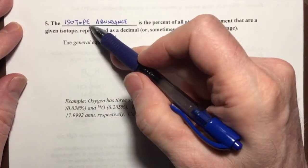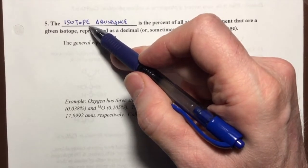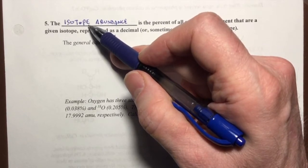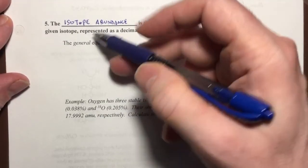We know that isotopes are when you have two atoms of the same number of protons, so they're the same element, like two carbons, but they have different numbers of neutrons in their nucleus, which makes them isotopes of each other.